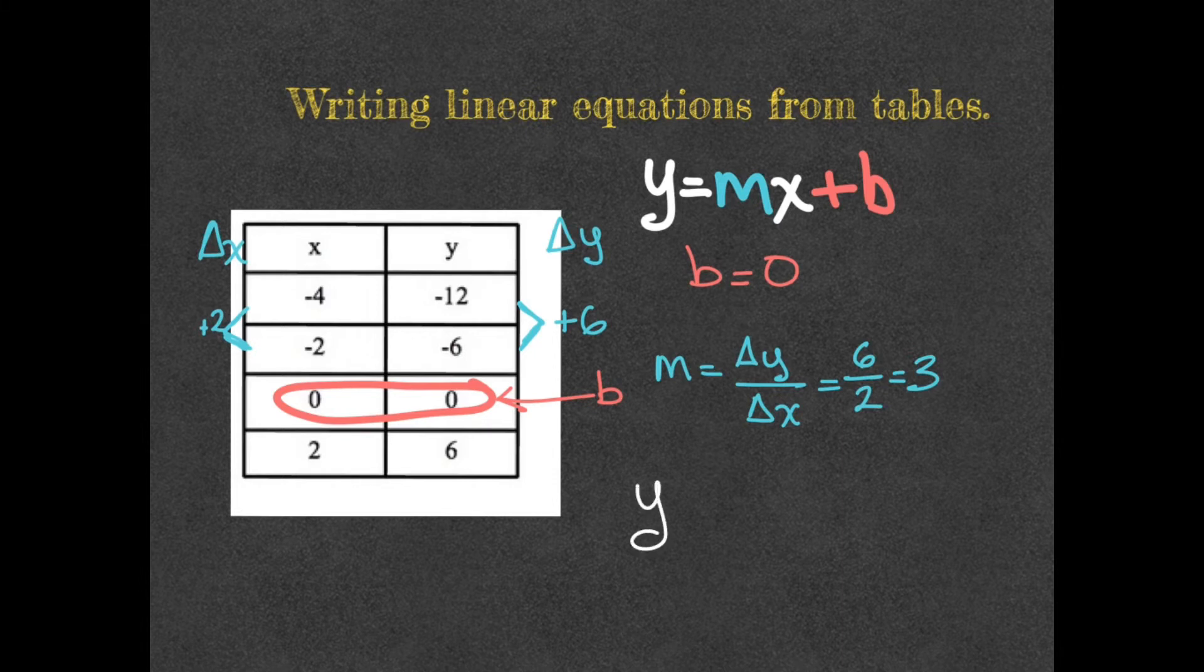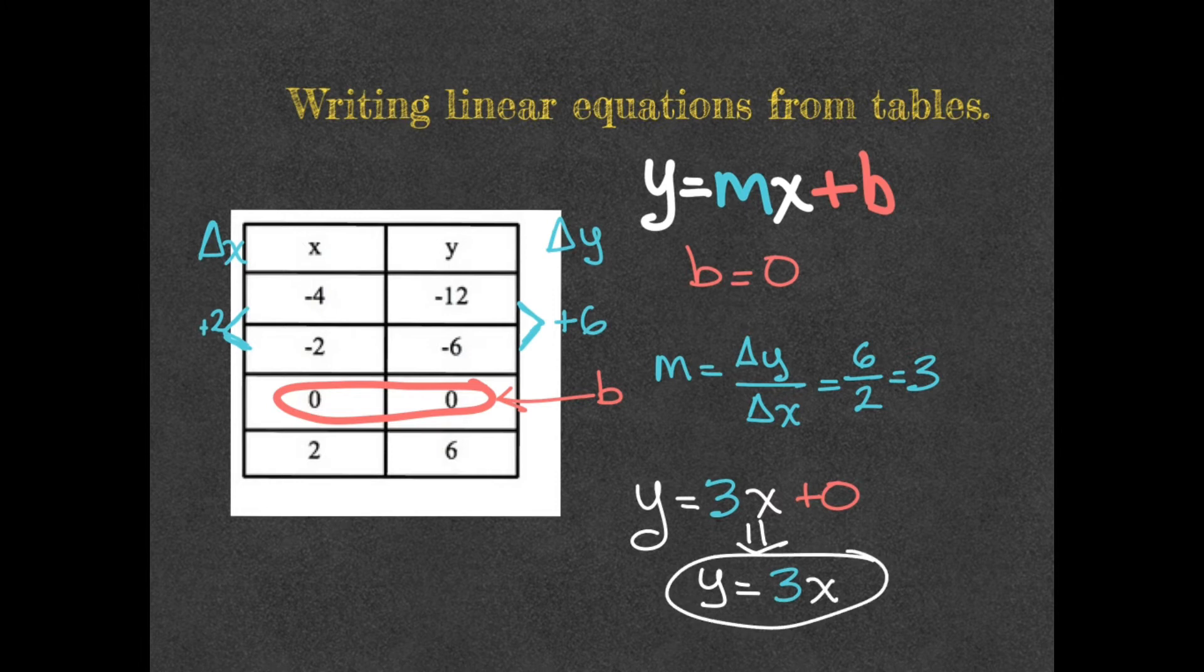My equation is y equals 3, which is the slope, x. And then here we can say plus 0. But in reality, we're never going to see a plus 0. So this equation should look like y equals 3x. And that will be the equation for this table. Let's look at another example now.